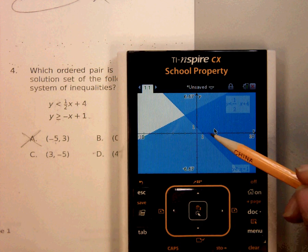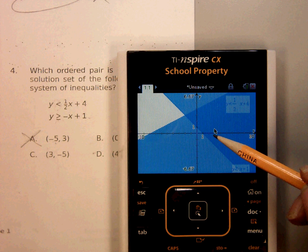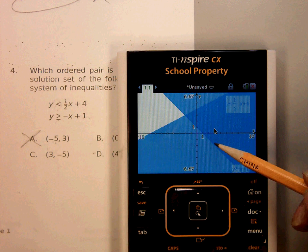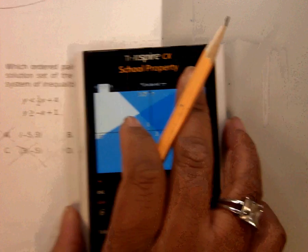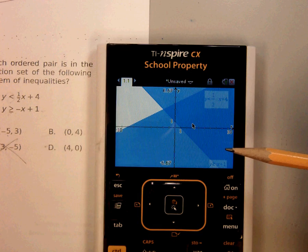So three, negative five. One, two, three. Negative five. Go down. Nope. Nope. Zero, four.